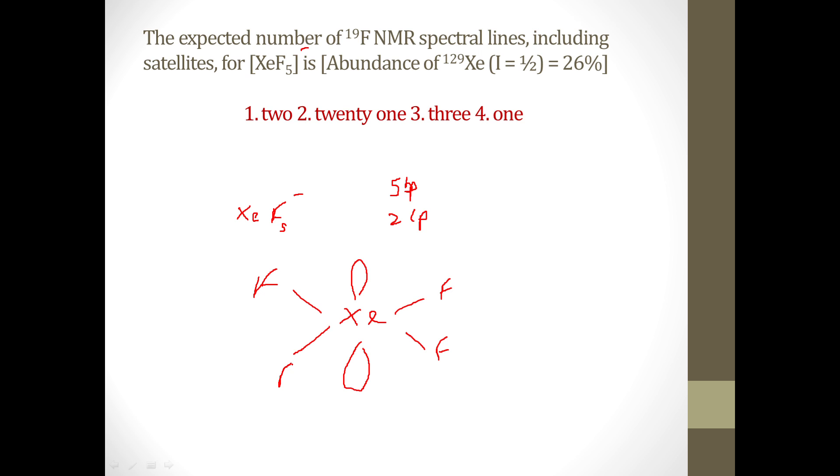Or you can say they are in the same environment. These five fluorines are equidistant from one another and they are lying in the same plane. So that means these five fluorines are in the same chemical environment.